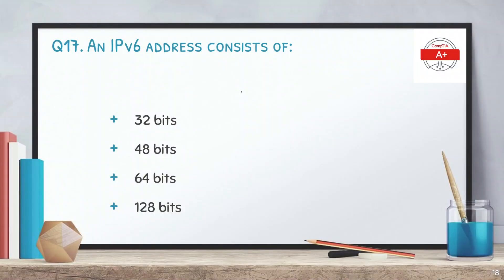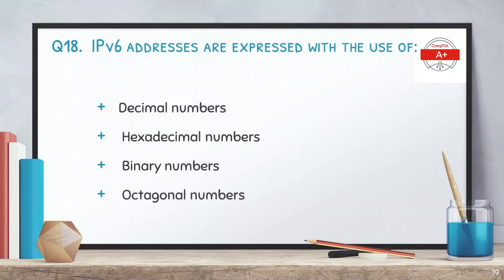Question number 17: an IPv6 address consists of how many bits? The options are 32, 48, 64, and 128 bits. The correct answer is 128 bits. Note that 32 bits was IPv4 and 48 bits is actually the length of a MAC address. Question number 18: IPv6 addresses are expressed using which type of numbers? The options are decimal, hexadecimal, binary, and octagonal. The correct answer is hexadecimal numbers. So IPv4 uses decimal notation while IPv6 uses hexadecimal.